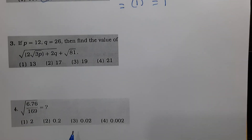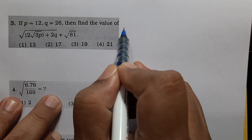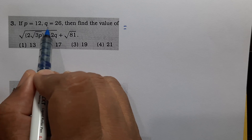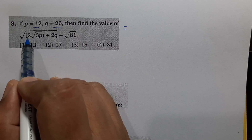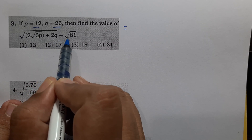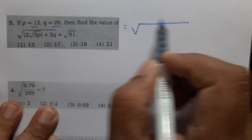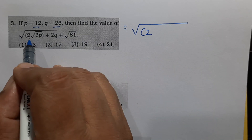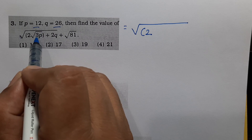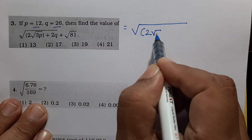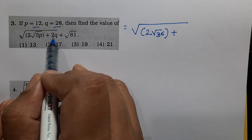Question 3: If p equals 12 and q equals 26, find the value of square root of 2 times bracket: square root of 3p plus 2q plus square root of 81. Substituting: 3p equals 3 times 12 equals 36, so square root of 36 equals 6. And 2q equals 2 times 26 equals 52.